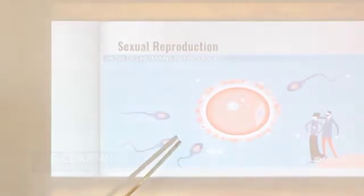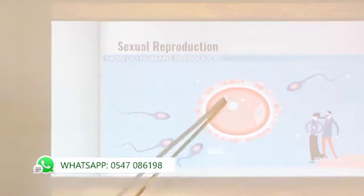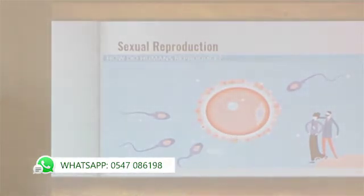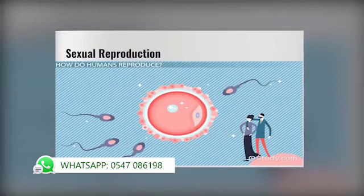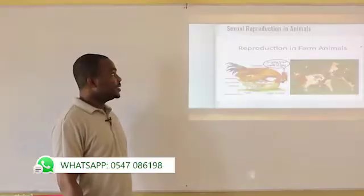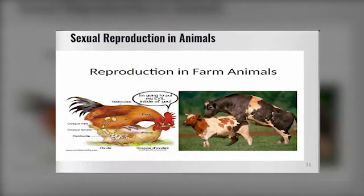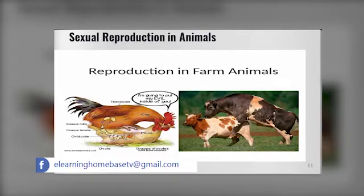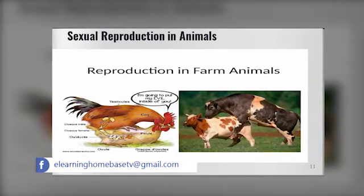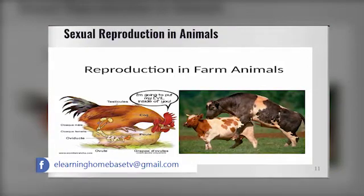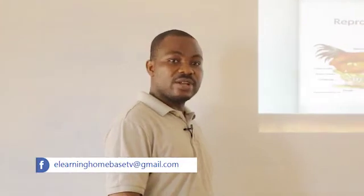These are the male gametes, also called sperm. And this is an example of the female gamete called egg or ovum. This picture is under high magnification of a light microscope. Here is another example of sexual reproduction in animals: the male, which is the cock, on top of the female, which is the hen; and the male, which is the bull, on top of the female, which is the cow. This is how sexual reproduction occurs.